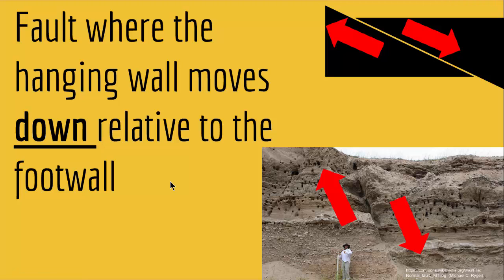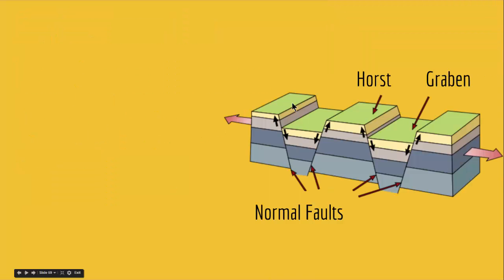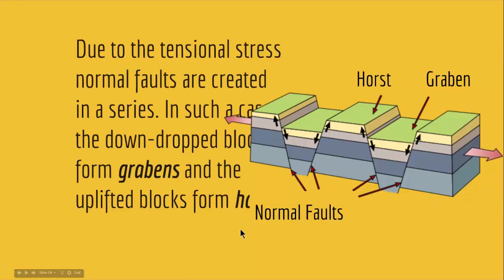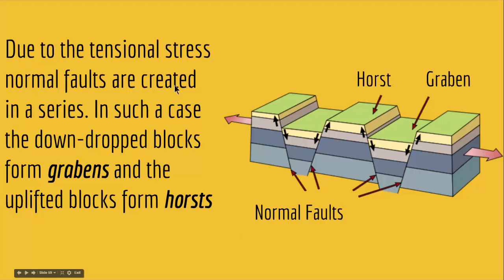When you get a series of normal faults in a row — imagine strata being pulled from both sides — the strata get broken into parts. You get a series of normal faults where the hanging wall moves down at each fault. This has a special name in geology: Horsts and Graben. Due to tensional stress, the down-dropped blocks form Graben and the uplifted blocks form Horsts.